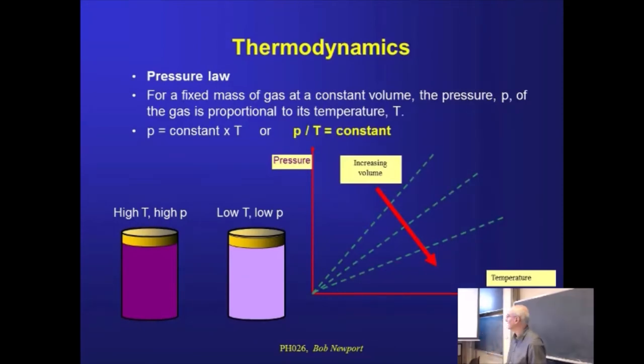So those are our three key gas laws, and they're all enshrined in this table here. The quantities that we've kept constant through these three variants are the mass of the gas, the number of atoms and molecules in our system. But then for each one in turn, we've kept one of the other principal physical variables constant and looked at the variation of one of the other two as the third one is changed. Boyle's law was fixed temperature, Charles's law was fixed pressure, the pressure law was fixed volume, and we ended up with these basic relationships between the other two variables in our system.